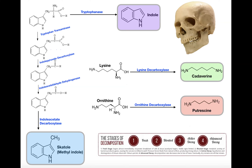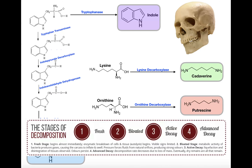Before we go any further, let's briefly talk about the stages of decomposition. The first stage is the fresh stage, which occurs immediately after death and involves the breakdown of the dead individual's own tissues via autolysis, where the person's own enzymes break their own tissues down. During this stage, it is probably not going to be very visible — the signs of decay will not be truly visible until the second stage at the very earliest.